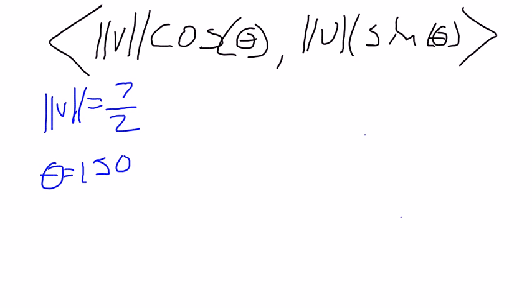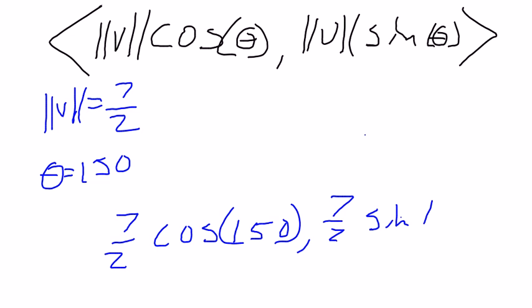So what we're going to do is substitute those in. So it would be 7 halves cosine 150, 7 halves sine 150.